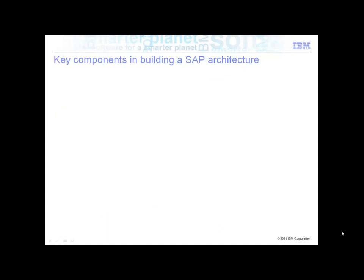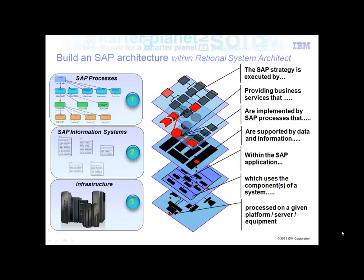Key components in building a SAP architecture. It's the SAP strategy and the business strategy adopted by the organisation that drives the direction in which the business is moving. It is the instantiation of that by virtue of the processes, the systems, the people, and the technologies to support that, which is implemented to help the business deliver to the strategic intent of the organisation. It is the provision of business services implemented by those SAP processes using the SAP data running on the applications and hardware that satisfies the needs of the business.